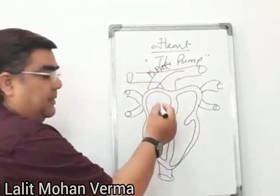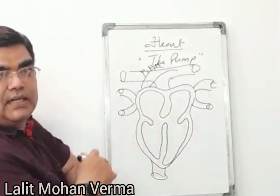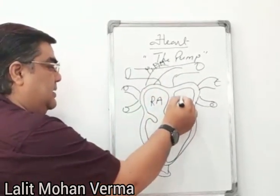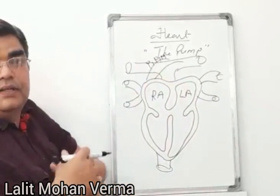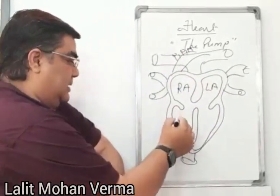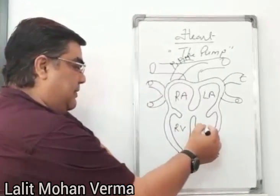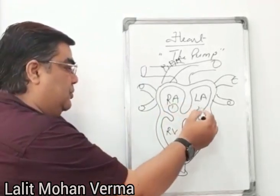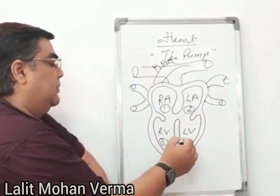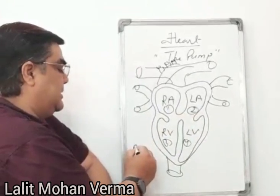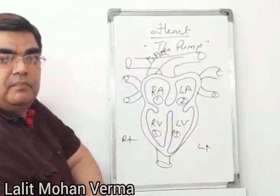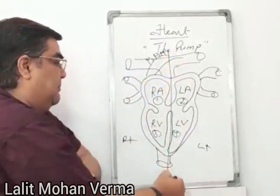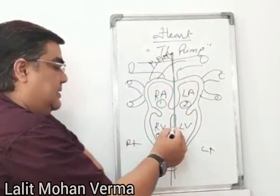The upper part is called the auricle. This is the right auricle or atrium, and this is the left auricle or left atrium. This one is the right ventricle, and this one is the left ventricle — so four chambers in total. The blood is separated in the chambers by a septum.